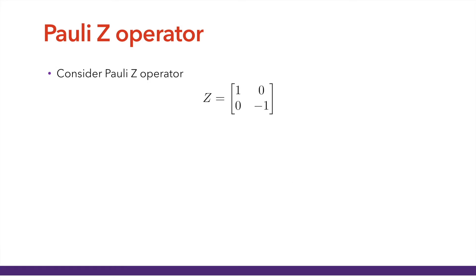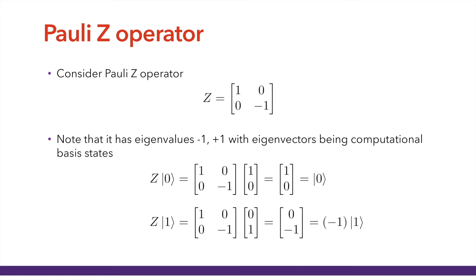What I'm claiming is that the correct Hamiltonian is constructed by taking our binary variables s_i in {−1, +1} and replacing them with the Pauli Z operator. This is our main building block, the Pauli Z operator. Just by looking at it, you can note that it has eigenvalues −1 and +1 with eigenvectors being the computational basis states. So Z applied to |0⟩, which is column vector [1, 0], gives back [1, 0] — the eigenvalue +1 times |0⟩. And applying Z to |1⟩ gives a factor of −1 in front.